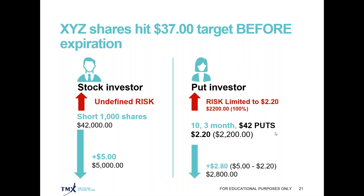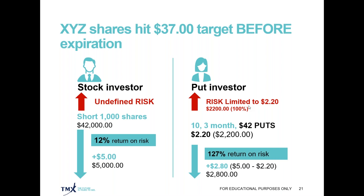On the positive side, if the shares do drop, the put buyer will make the difference between the strike price and the settlement value — in this example $37, which is $5 — less the $2.20 premium paid, leaving $2.80 per contract or $2,800 for this position. The short seller made a 12% return on their risk with undefined risk exposure, whereas the put buyer has a 127% return on risk with a defined risk exposure if they happen to be on the wrong side of the position.